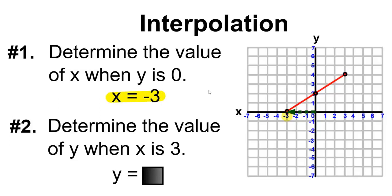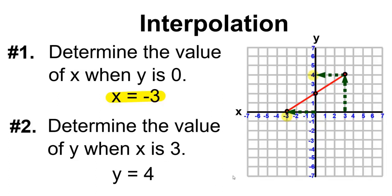Number 2: Determine the value of y when x is 3. Start at x. Give x a value of 3. Then go straight up until you hit the line of data. From here, you're going to go perpendicular to the left until you hit y. That will be at 4. So when x has a value of 3, y has a value of 4.